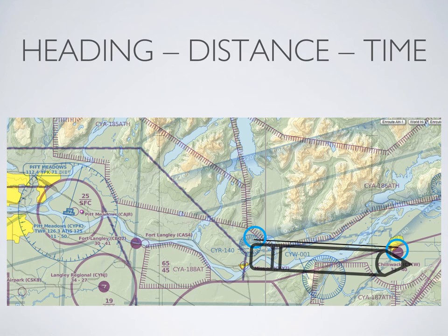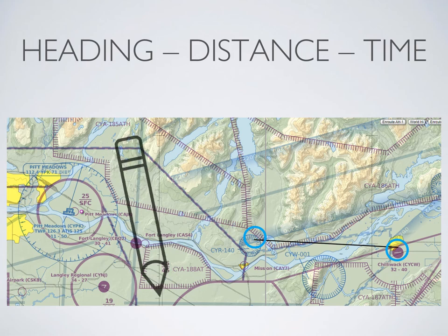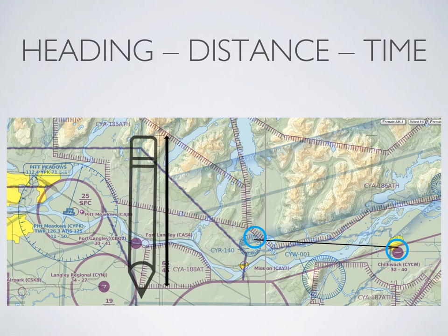Figuring out the distance is actually quite simple, even though you're not allowed to use a navigational ruler or even a notched pencil. If you just take your pen or pencil, line it up and gather the distance of your intended track, then adjust your pen or pencil along the minutes of latitude found on the VTA. All of these little notches are representative of one nautical mile or one minute of latitude. You can use your pencil as a chart rule to determine the distance to your destination.